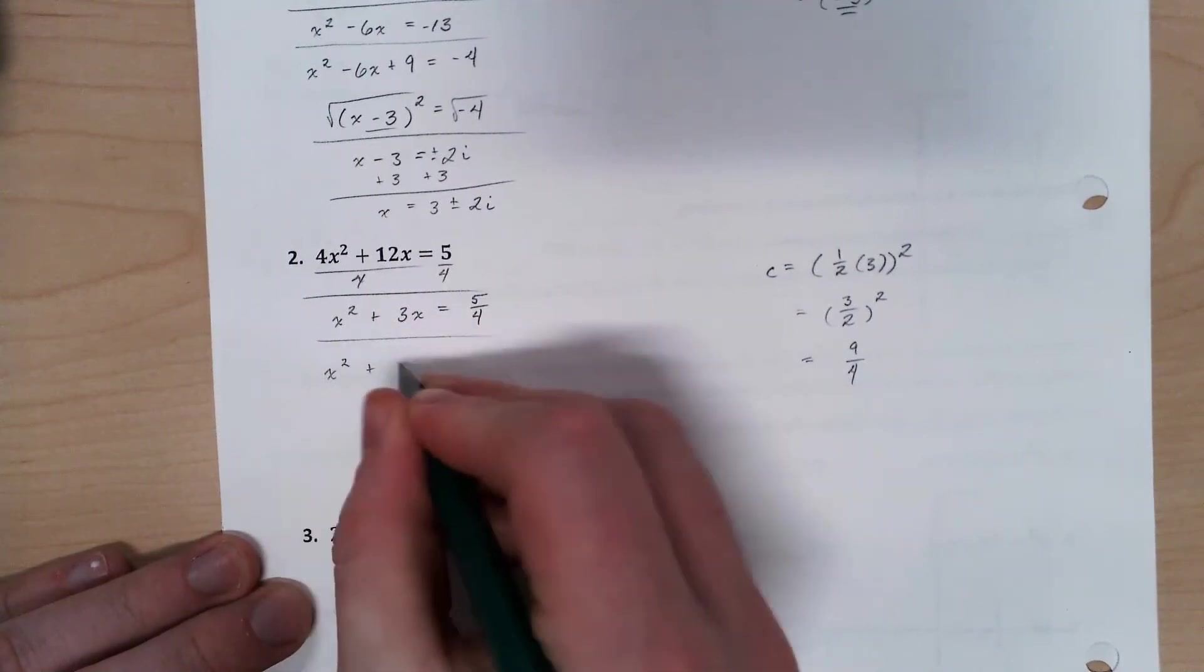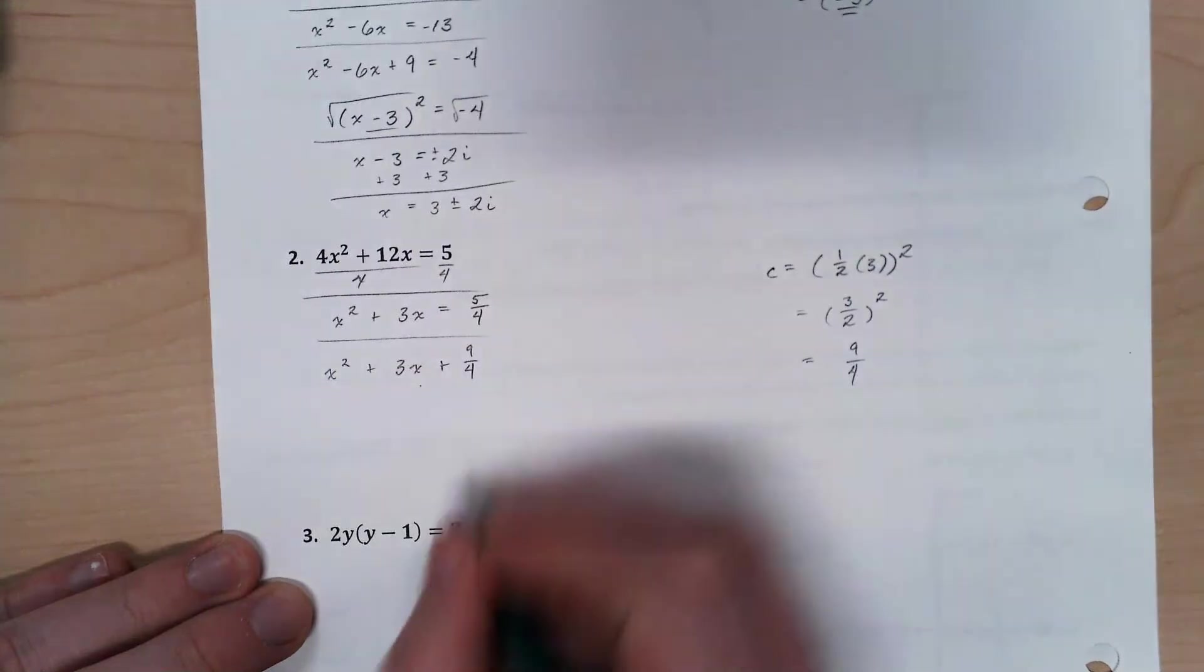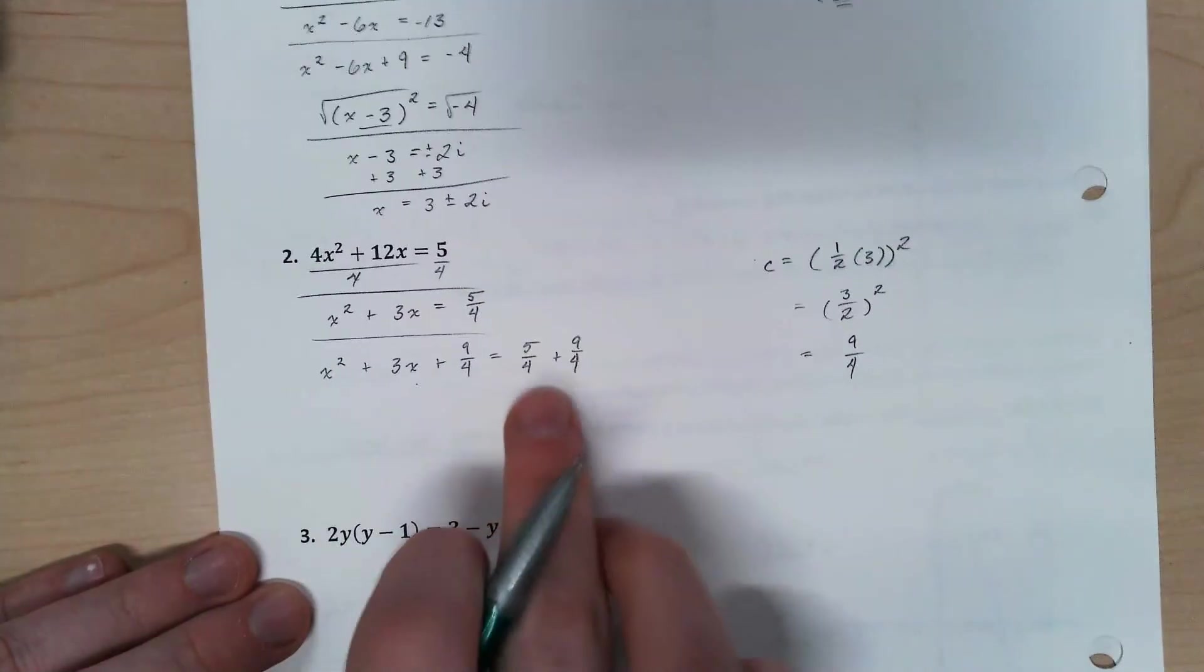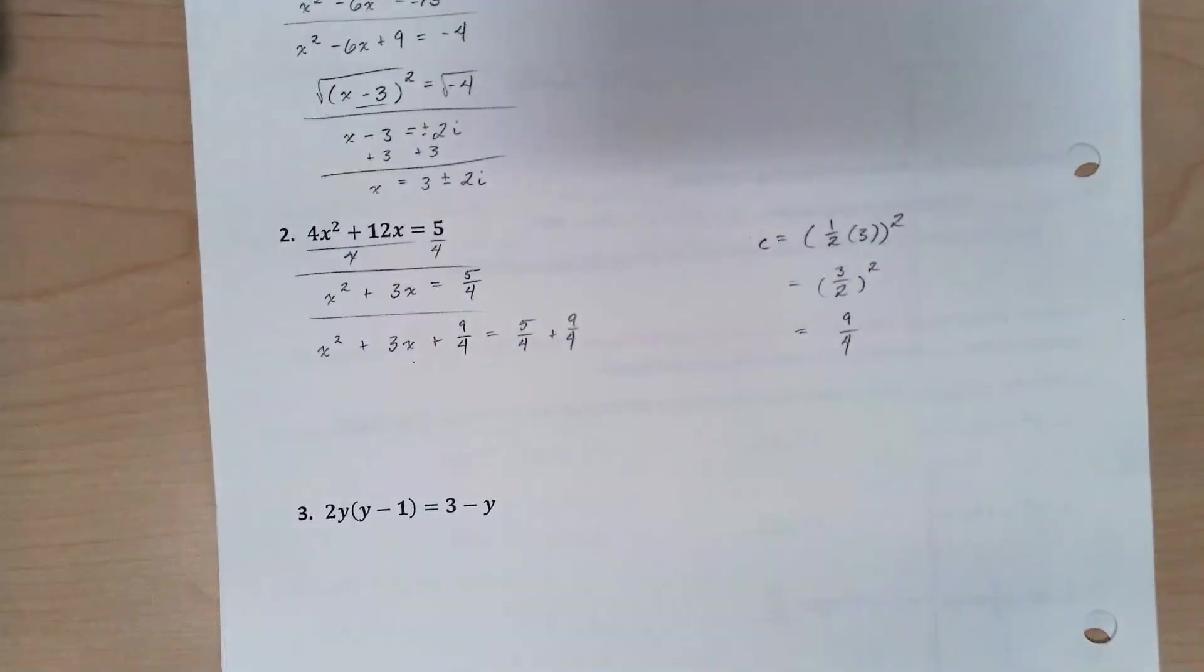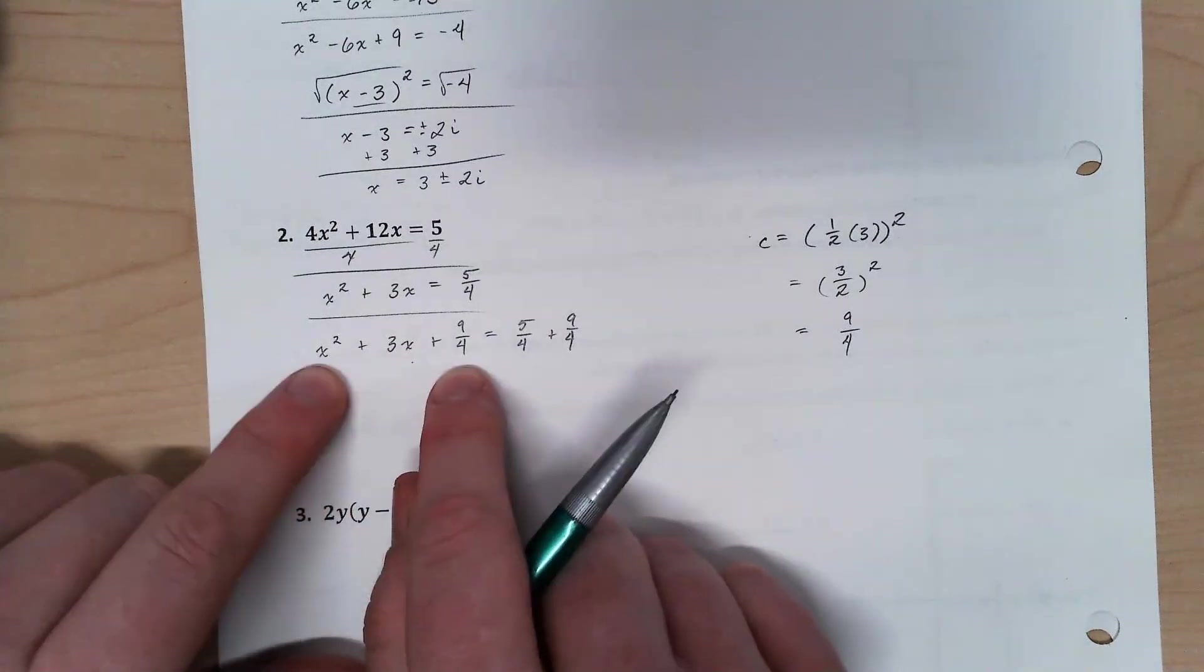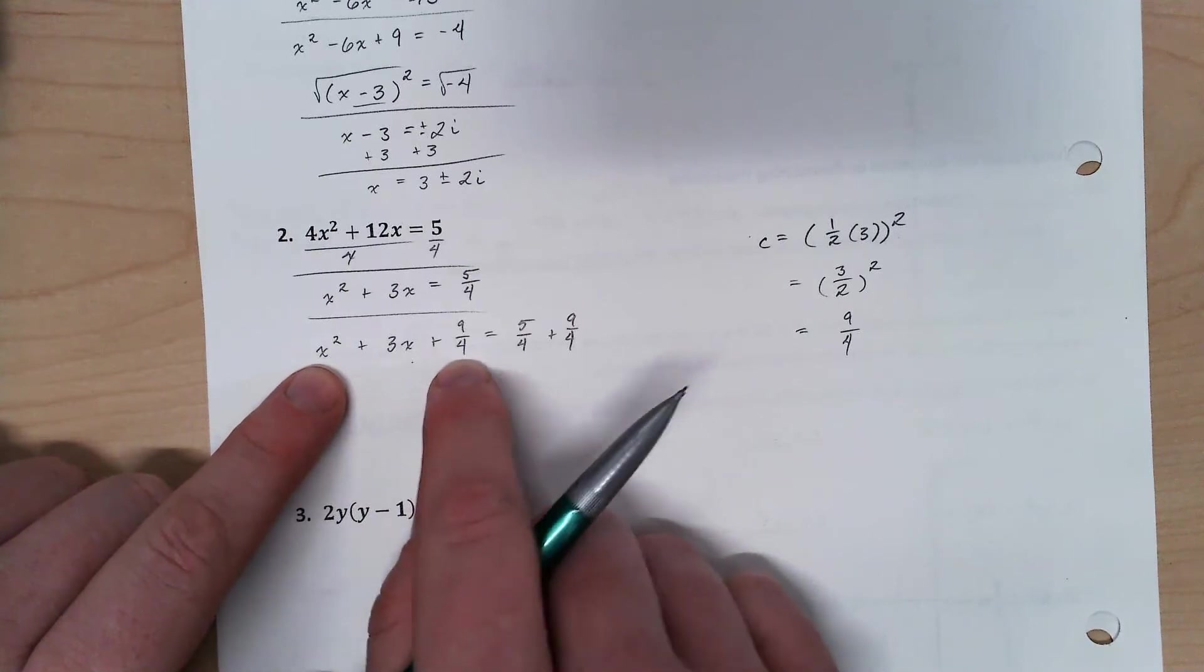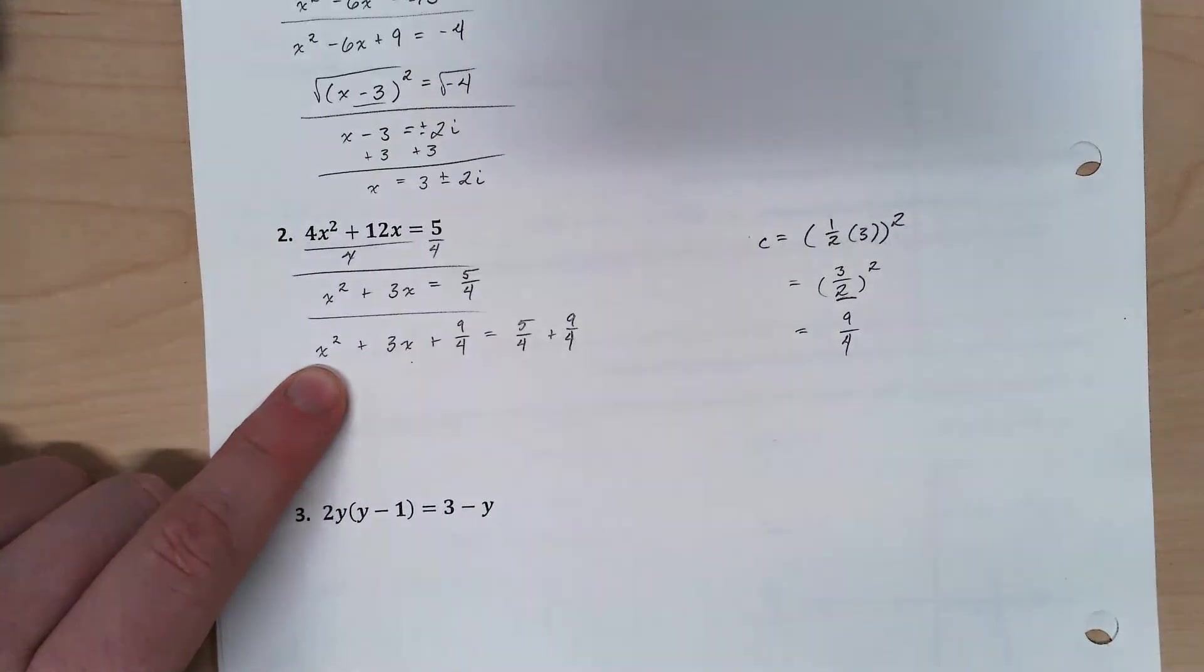x squared plus 3x plus 9 over 4 equals 5 over 4 plus 9 over 4. We'll simplify that on the next step. So in trying to figure out how on earth I would factor this, I don't have to spend a bunch of time trying to figure out factors of 9 over 4 that add to 3. I can just come over here. It's going to be that value.